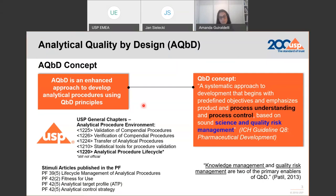The first question is: what is AQBD? Looking at ICH guideline Q8 for pharmaceutical development, you find the QBD concept — a systematic approach to development emphasizing product and process understanding and process control, based on sound science and quality risk management. In the analytical procedure environment, we use the term AQBD, analytical quality by design, referring to the application of quality by design principles to method development. USP has several public standards addressing different stages of the procedure lifecycle, such as Chapter 1225 on validation and Chapter 1226 on verification of procedures.